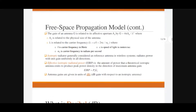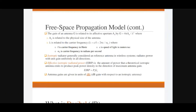In this equation, the gain of an antenna G is related to its effective aperture Ae. The effective aperture is described as: G = 4π·Ae / λ², defining the gain of an antenna in terms of effective aperture Ae.